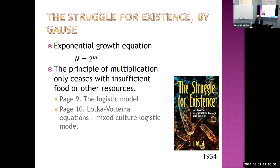He wrote his book 'The Struggle for Existence' in 1934 as a result of his PhD work — a term referring to natural selection and evolution. He summarized his experiments and discussed several mathematical equations, including exponential growth, the logistic model, and then the Lotka-Volterra equation that we're going to use in this lecture for intraspecific and interspecific competition, where you have two species competing for resources.